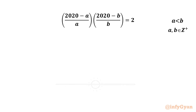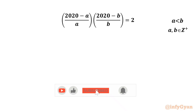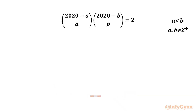Welcome to Infigyan friends. Today in this video we have one very interesting and challenging question from Diophantine equations. We have to solve (2020 minus a)/a times (2020 minus b)/b equal to 2, given that a and b are positive integers and a is less than b.